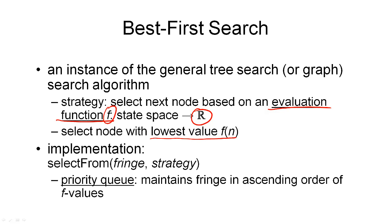A quick word about the implementation. There are two key operations we need to support on the fringe: adding successors of a node, and selecting the node with the lowest f value for expansion. Since both operations happen frequently during the search, it is important that they are cheap. A good way to implement this is by means of a priority queue, which maintains all nodes in ascending order of their f values. A priority queue can be implemented as a binary tree, giving both operations logarithmic time complexity.